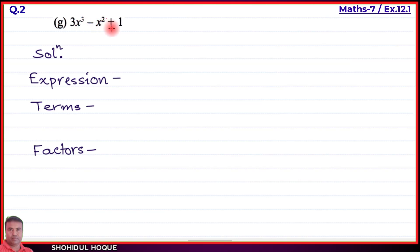Part (g): the expression is 3x³ - x² + 1. The terms are 3x³, -x², and 1.